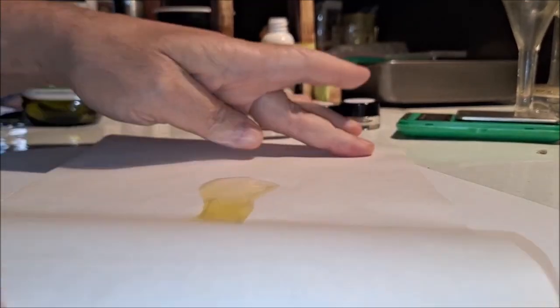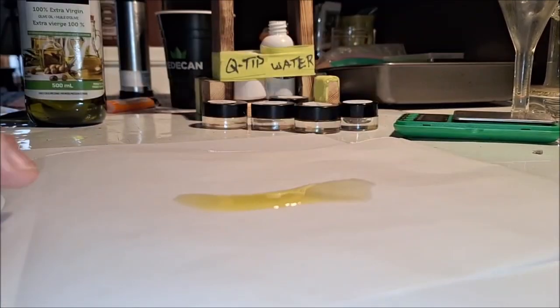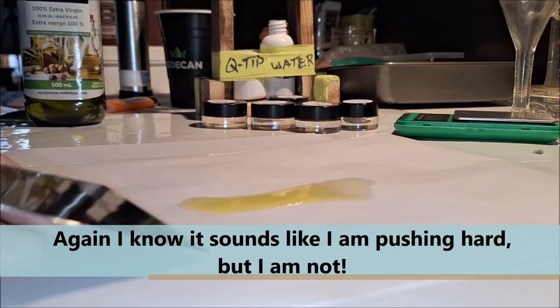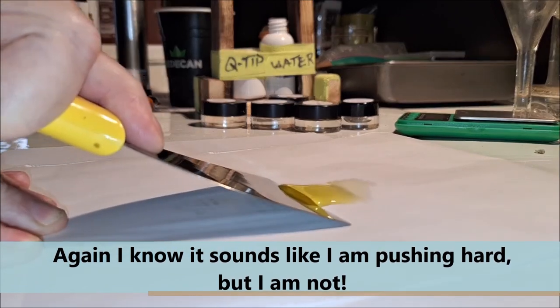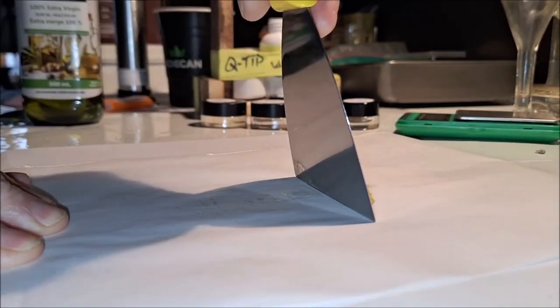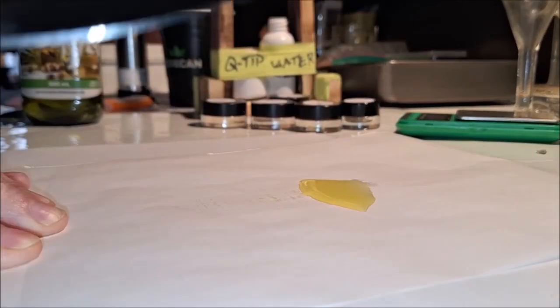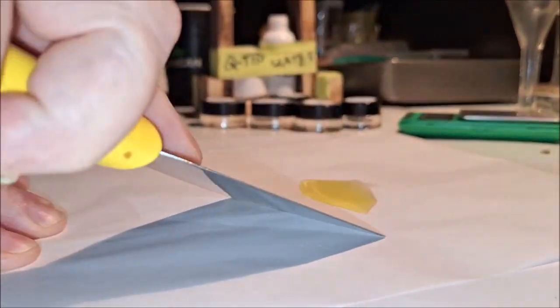You just take your drywall tool and you push it across the paper. Do you see how that cleans that up underneath? And you just put it on here and scoop it up like this, see?